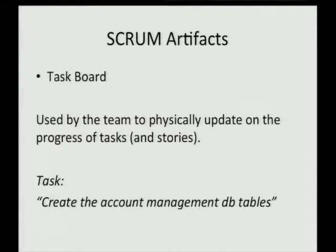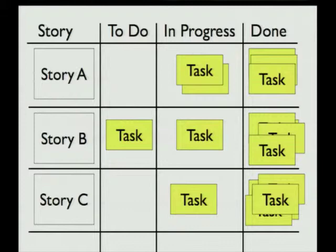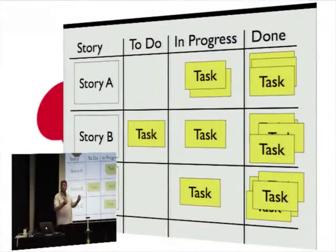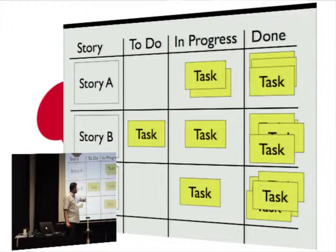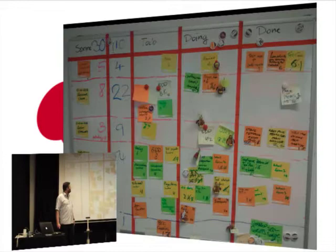Then you've got the task board — one of the first physical tools the team uses. They track the progress of individual tasks through stages of completion during the sprint. These are more technical in nature, being smaller parts of the stories. For example, creating database tables would be part of a story. The stories are ordered by priority on the board, starting in to-do, and stickies gradually move their way across into the done column.